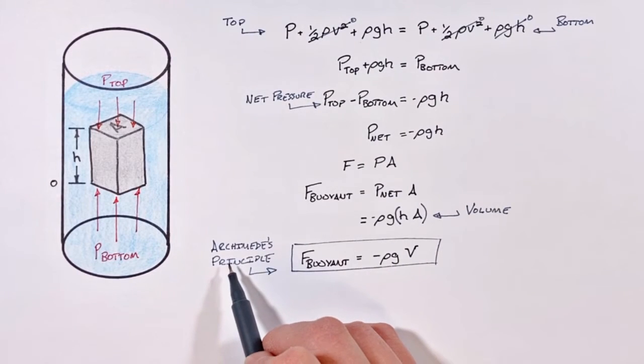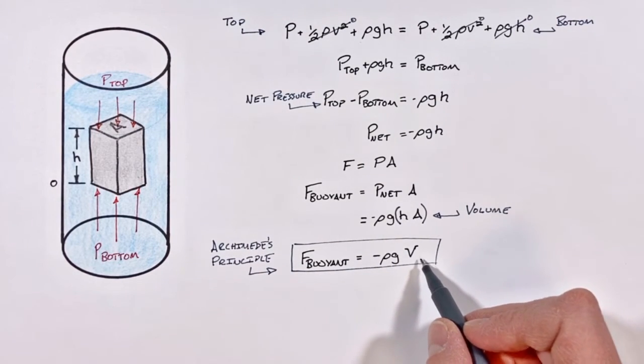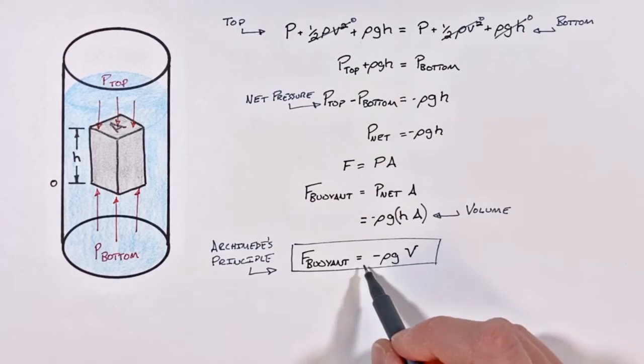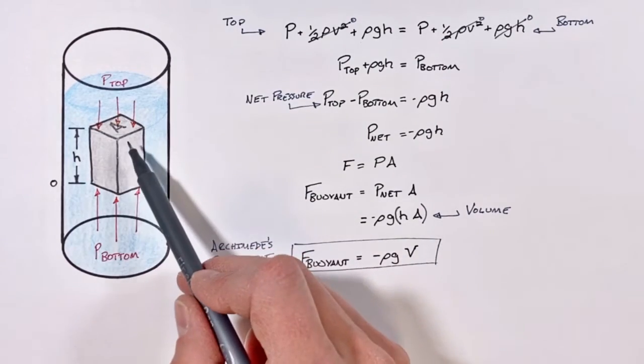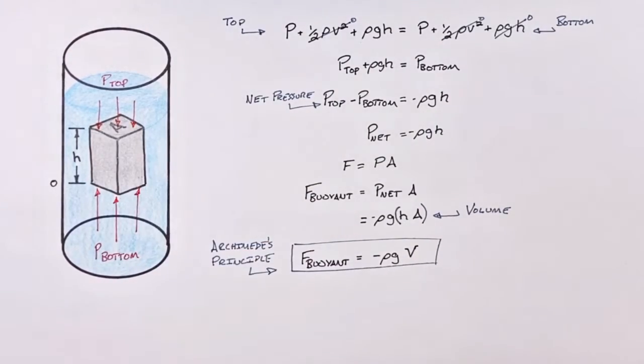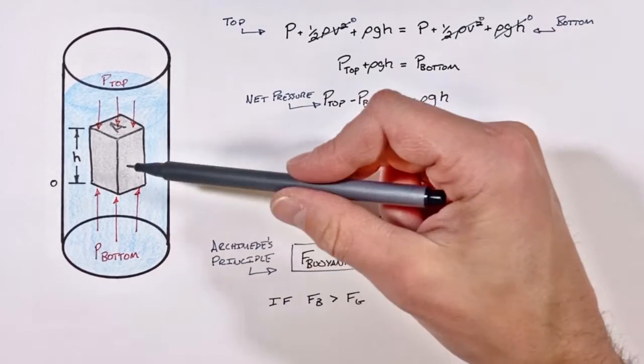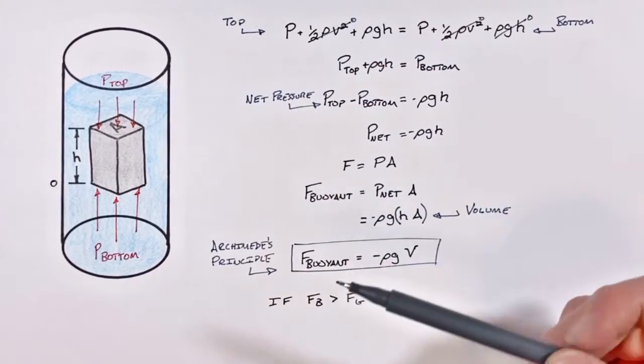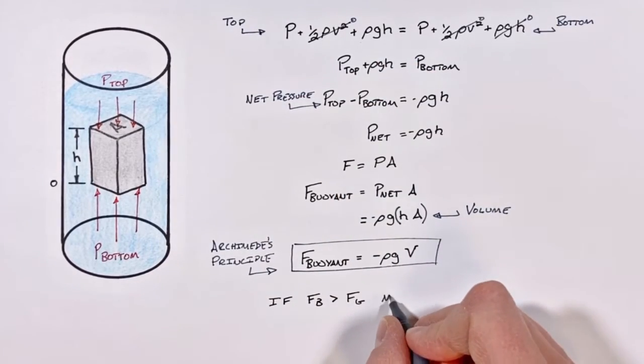And effectively what Archimedes' principle says is the buoyant force is equal to the weight of fluid which is displaced by an object. If the buoyant force is greater than the force by gravity, we're going to find that an object has a net force upward and therefore it moves upward.